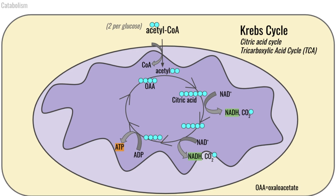That four-carbon compound is going to go through another reshuffling, in which it is going to add a phosphate to ADP in order to generate some ATP. So we're actually synthesizing some energy here. Then that four-carbon compound is going to get reshuffled again, and in that reshuffling process we are going to reduce an FAD to FADH2. You can think of FAD as another compound that can be involved in redox reactions, so we've just generated some FADH2 from this four-carbon reshuffling.